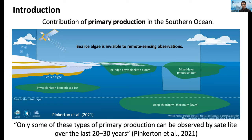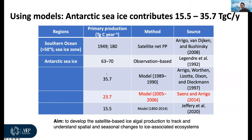In the big picture, there are many sources of primary production in the Southern Ocean, including phytoplankton. However, one source that can't be sensed from satellite is sea ice algae. This has been discussed for three decades: how can we estimate sea ice algal distribution around Antarctica? Using models, Antarctic sea ice algae contribute roughly 15–35 teragrams of carbon per year, about 10% of Southern Ocean production.